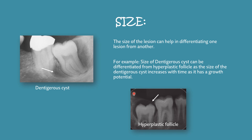Size: we must determine the size of the lesion to differentiate between lesions. For example, in dentigerous cysts the size increases continuously due to osmotic pressure, and they have a very high tendency to grow. But a hyperplastic follicle has very little chance of growing, so the size remains intact. Therefore, dentigerous cysts are larger in size than hyperplastic follicles — this helps differentiate between the two lesions, as they can look very similar.